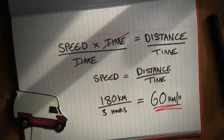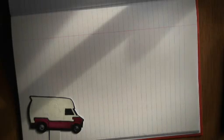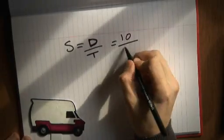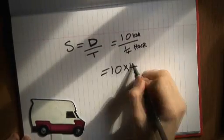So what about if I was just driving into town, which is, say, 10km away, but it only takes a quarter of an hour? Well, you do exactly the same thing. It's 10km divided by a quarter, which is the same as multiplying by 4, so you get 40km per hour.